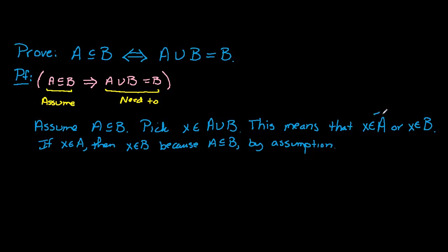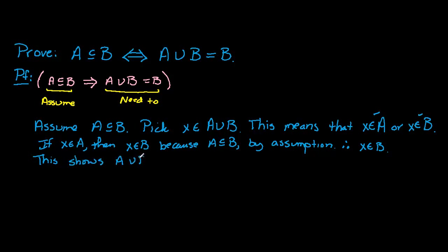On the other hand, if X is in B, then X is in B — that takes care of that case. So what we've shown is that for any X in A union B, X is in B. Since X was arbitrary, A union B is a subset of B.